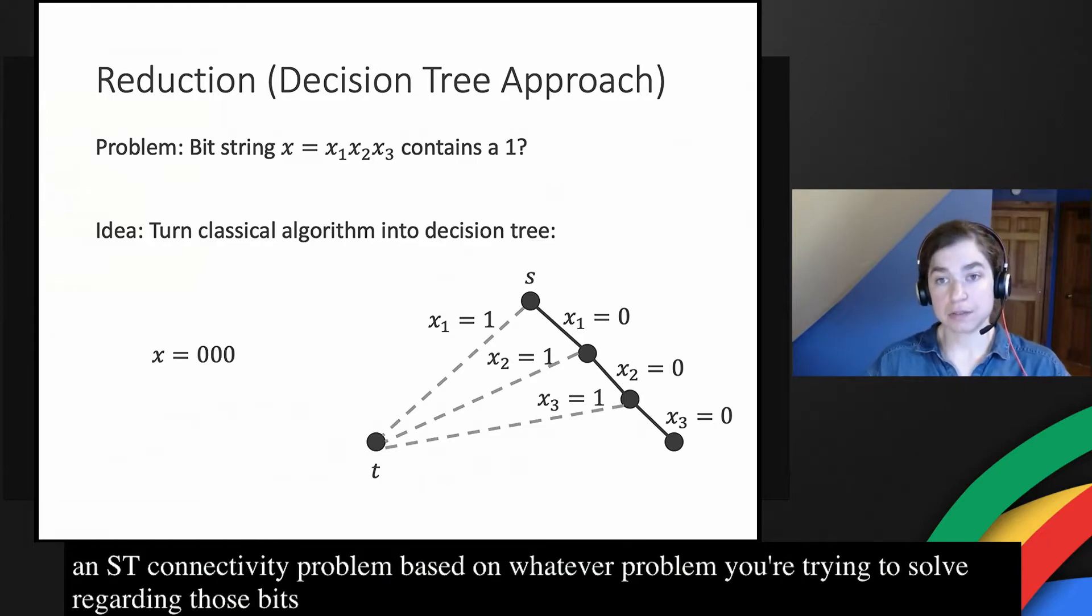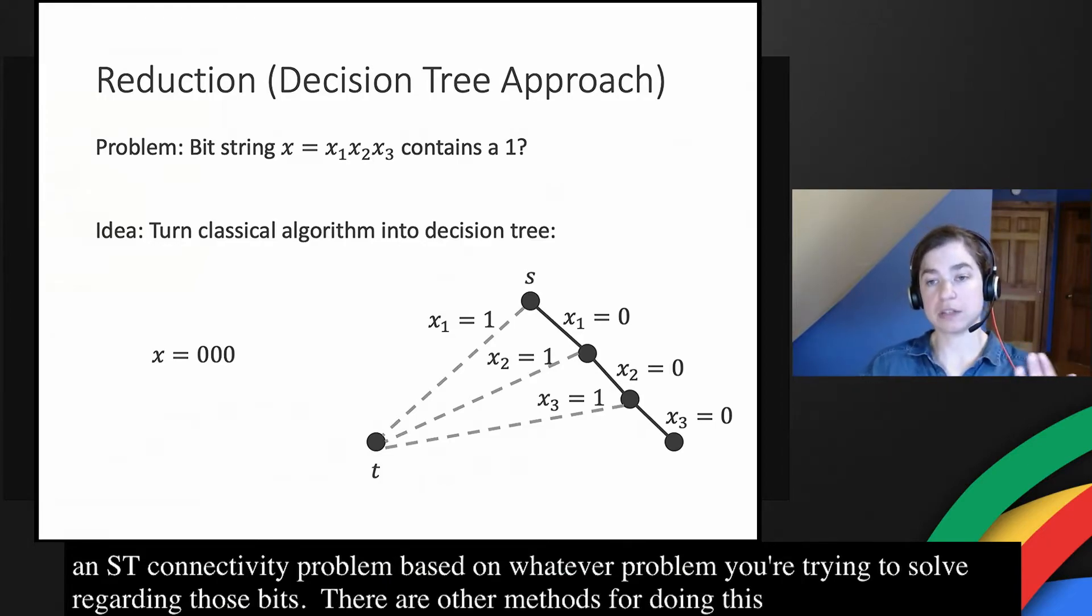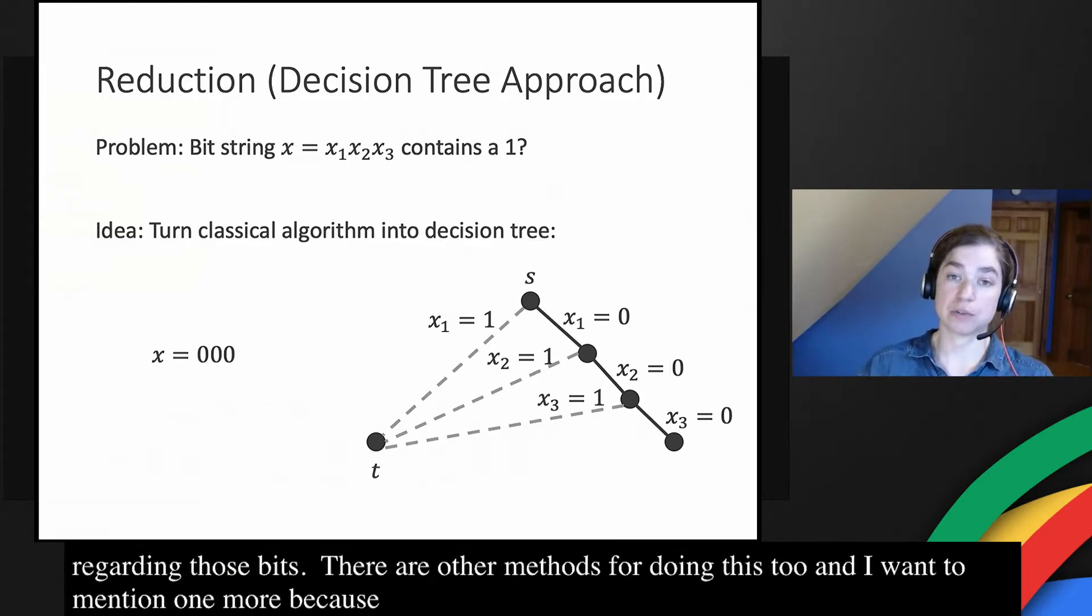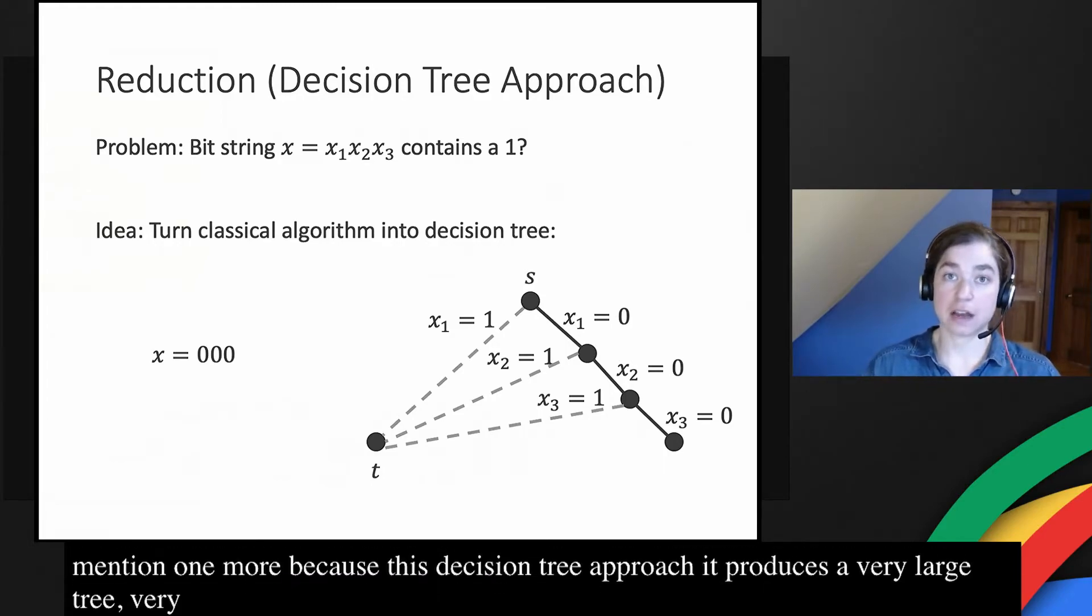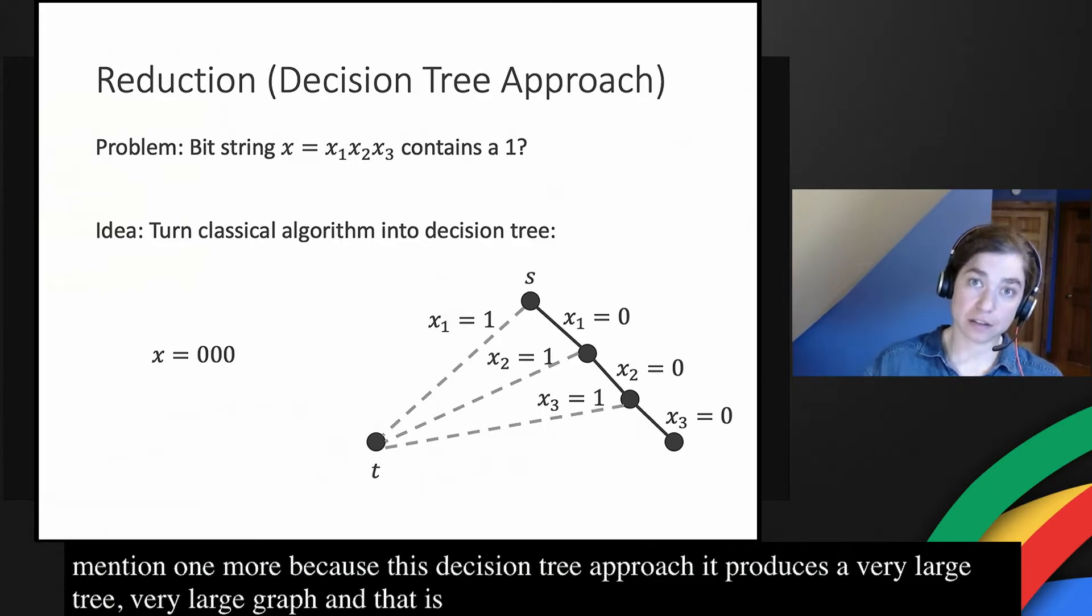There are other methods for doing this too. And I want to mention one more because this decision tree approach, while it always works, it produces a very large tree, a very large graph. And that is not ideal for creating a quantum algorithm.